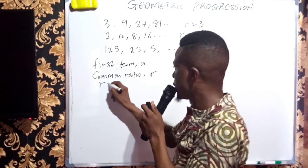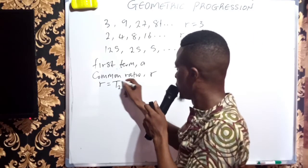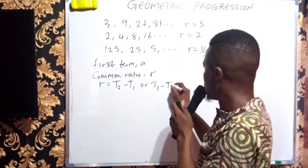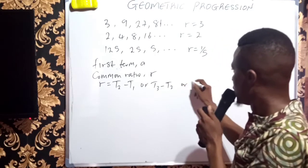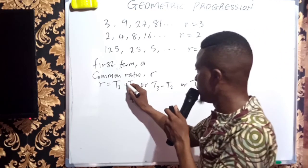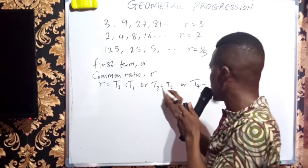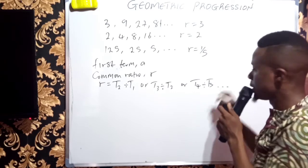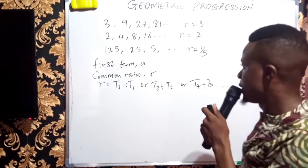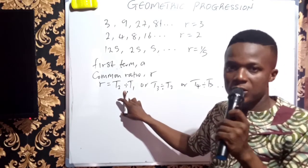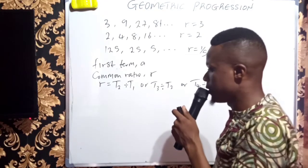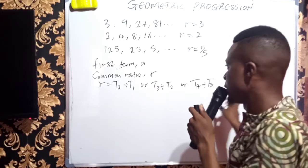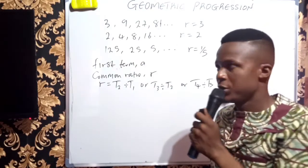Now, the common ratio is just T2 divided, not even minus, division, divided by T1 or T3 divided by T2 or T4 divided by T3, in that sense, etc. But if it is arithmetic progression, we are just talking about subtraction here to get the common difference. But here, common ratios are obtained by division of a term and the term before it.